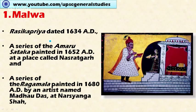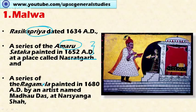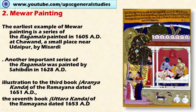The first school is the Malwa school. Its initial works include Rasikapriya dated 1634 and a series of Amaru Sataka painted in 1652 at Nasratgarh. A series of Ragamala was also painted in 1680 AD by an artist named Madhudas. This is a painting depicting a scene from the Ramayana — Ravana coming to Sita for alms before kidnapping her. Notice the face shows only two dimensions with no three-dimensional perspective, figures facing only one side — flat 2D faces characteristic of the Rajasthani school.